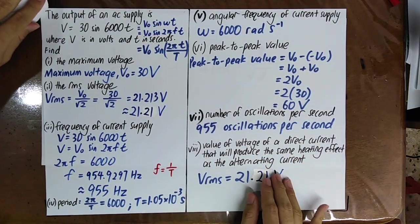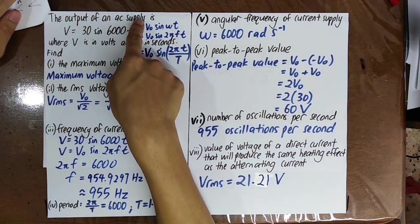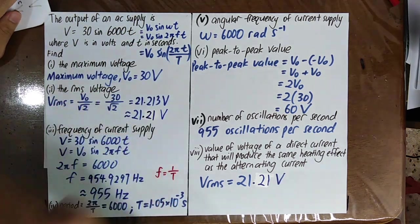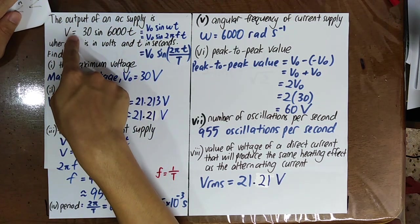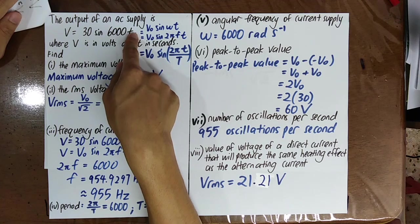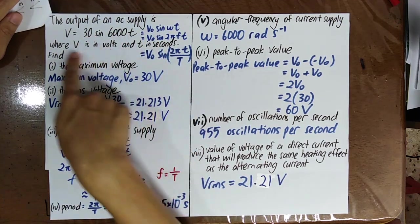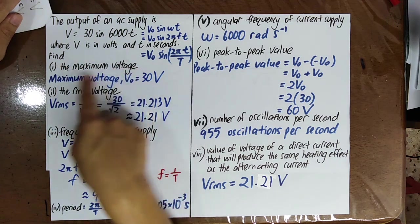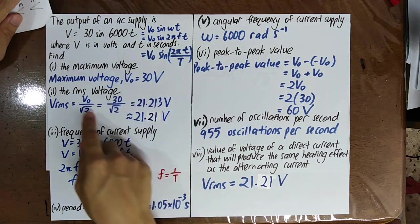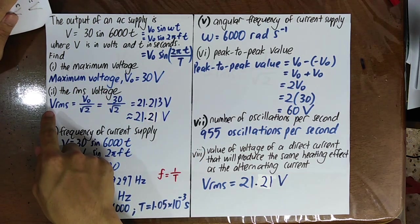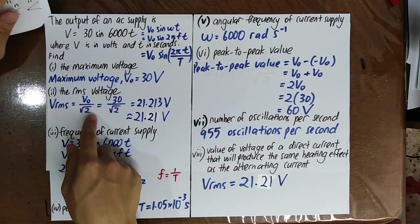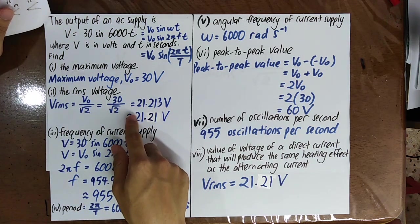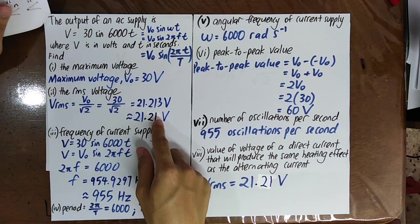Now let's do a question. The output of an AC supply is v = 30 sin(6000t), where V is in volts and t is in seconds. Comparing with v = V₀ sin(ωt), we identify V₀ = 30 V. The maximum voltage is V₀ = 30 V. The root mean square voltage is Vrms = V₀/√2 = 30/√2 ≈ 21.21 V.